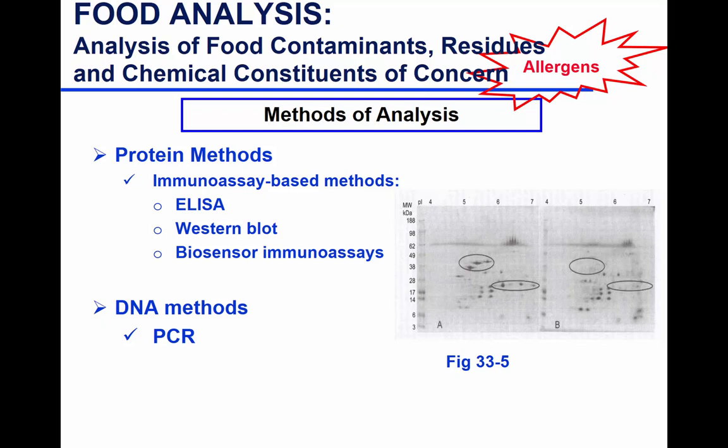Also, if the protein is processed or denatured, antibodies will not recognize it, so it won't be detected — even though it might still induce an allergenic reaction. Protein determination methods are very tricky because proteins can be processed, and how you extract them may impact their detection.